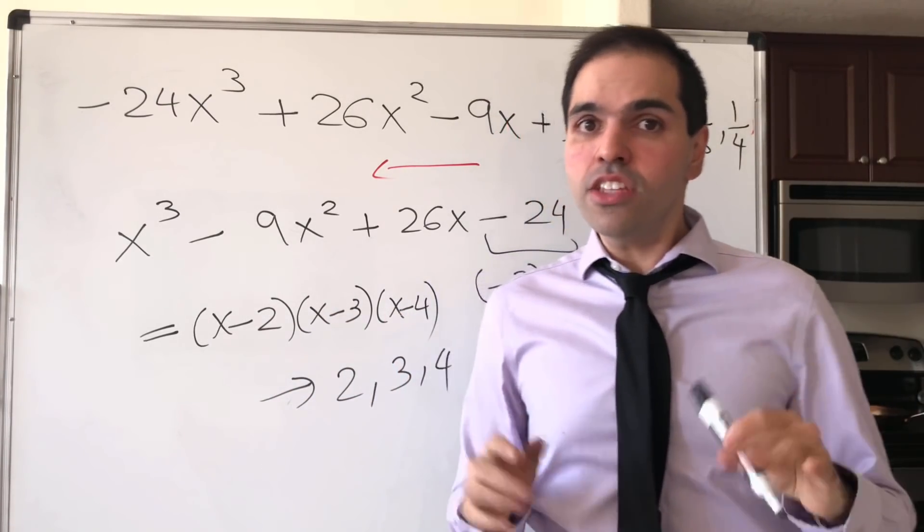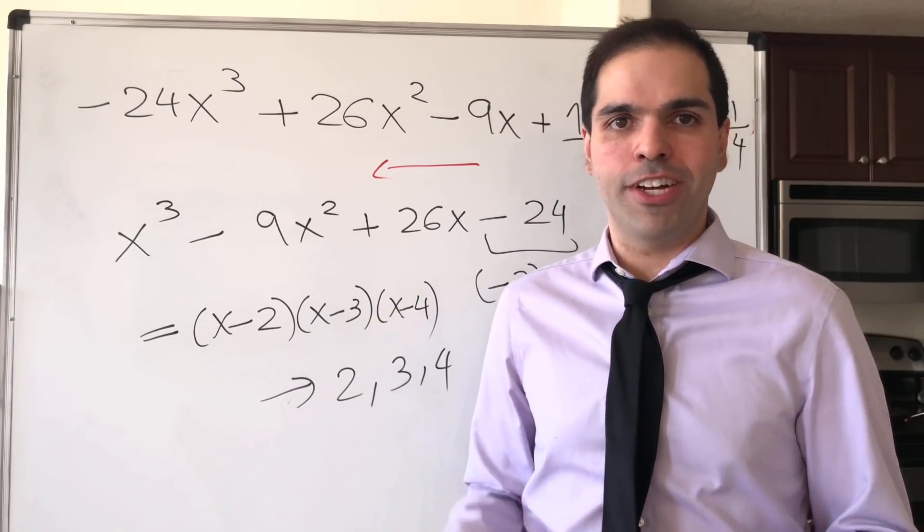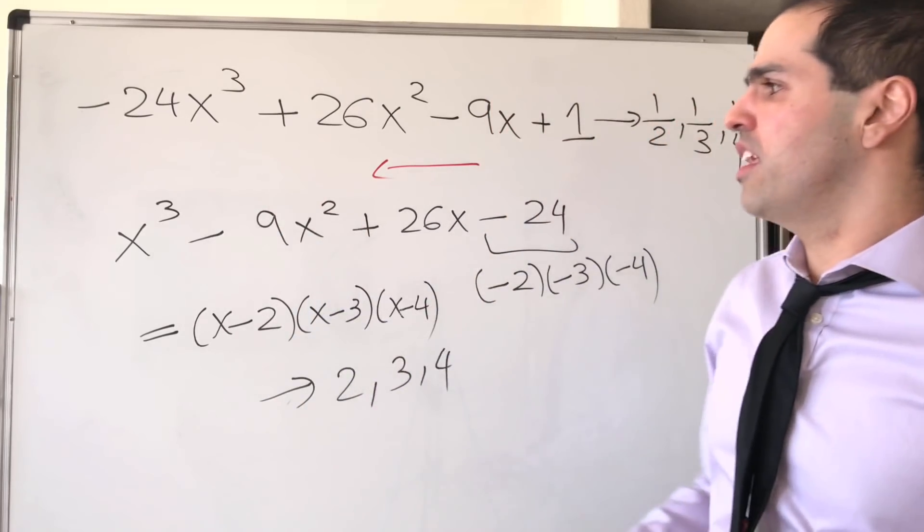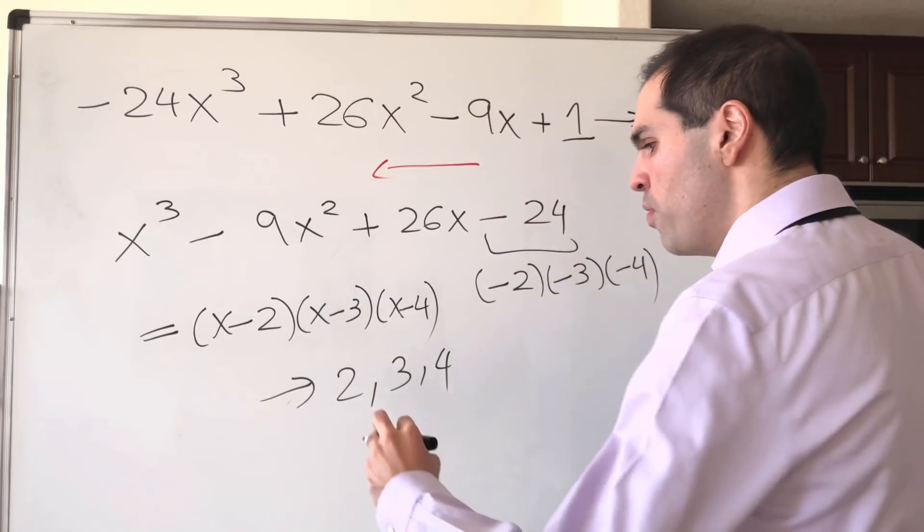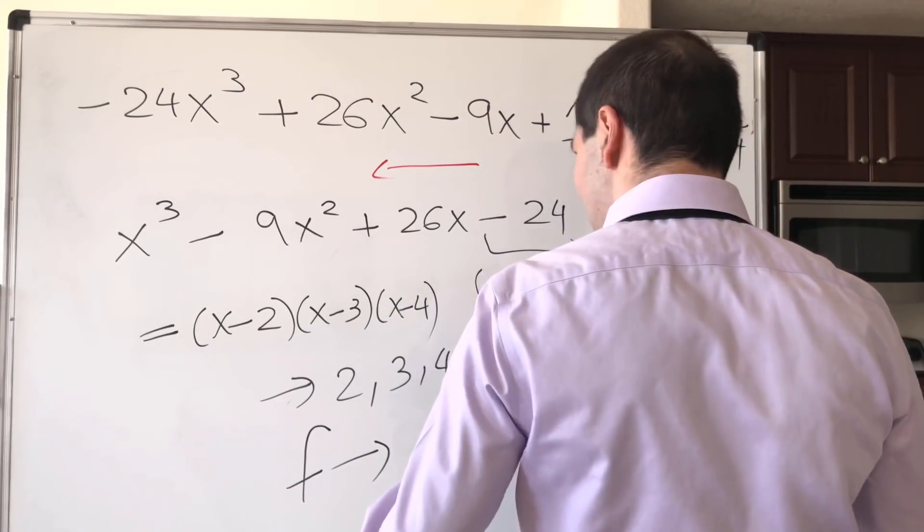And not only that, this does have a real-life application surprisingly in coding theory. There's something called error correcting code. And the cool thing is, if you have a polynomial f that generates, I believe, a cyclic correcting code c,